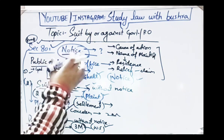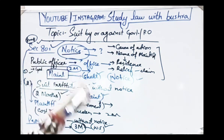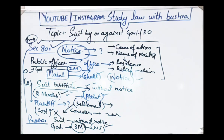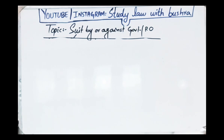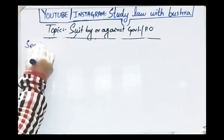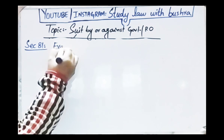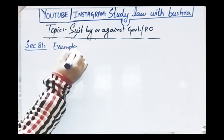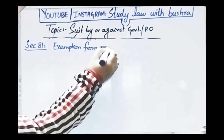So section 80 was discussing notice — what it is, when to give it, what must be mentioned in it, why it is given, and in what time period it must be given. I hope you understood it easily. Next is section 81, which deals with exemption from arrest and personal appearance.